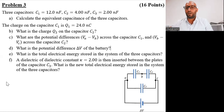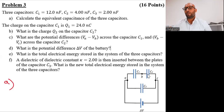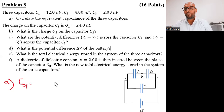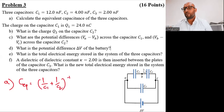To calculate the equivalent capacitance, let's see which ones are connected in series and which are connected in parallel. C1 and C2 are connected in series, so their equivalent capacitance will be (1/C1 + 1/C2)^(-1). These two capacitors are connected in parallel with the third one, so it's going to be plus C3.